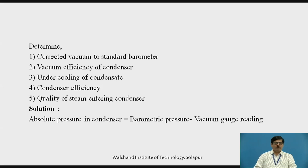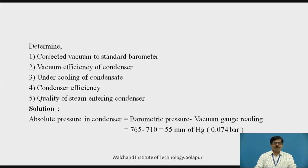The first step in the solution is to calculate the absolute pressure in the condenser. As already discussed in my previous sessions, the absolute pressure in the condenser is given by barometric pressure minus vacuum gauge reading. In the problem, barometric pressure is 765 and vacuum gauge reading is 710. So 765 minus 710 gives us 55 mmHg. Converting into bar, as 1 bar equals 750 mmHg, 55 mmHg divided by 750 gives us absolute pressure as 0.074 bar.